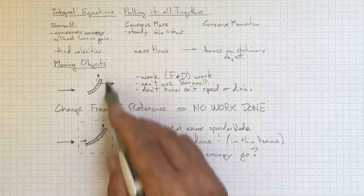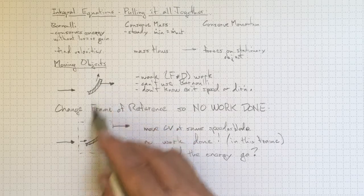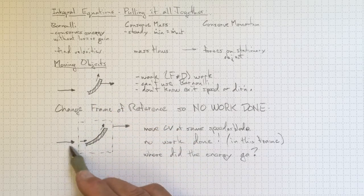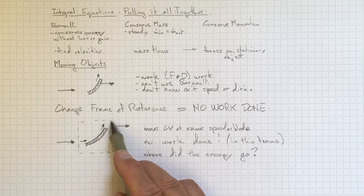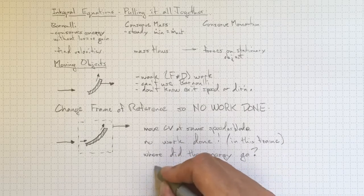So the energy that's going into the blade in this frame of reference is energy that we've taken out of the jet before it even gets to the control volume. It's a little bit of frame of reference, sleight of hand.